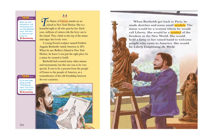Why was the Statue of Liberty made? It was a present from France to America as a remembrance of the old friendship between the two countries. When Bartholdi got back to Paris, he made sketches and some small models — models are small examples. The statue would be a woman whom he would call Liberty. She would be a symbol of the freedom in the new world, indicating freedom to the whole world.